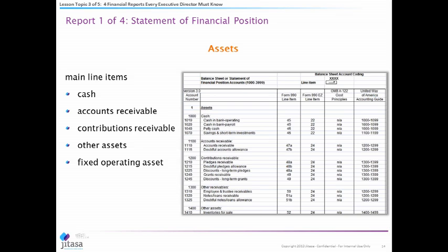When you look at assets — these are things that you own. It's an intuitive term. That's cash in the bank, accounts receivable where somebody owes you money, donations receivable, other assets, and fixed assets such as a building you own. These are the types of things that fall under assets.